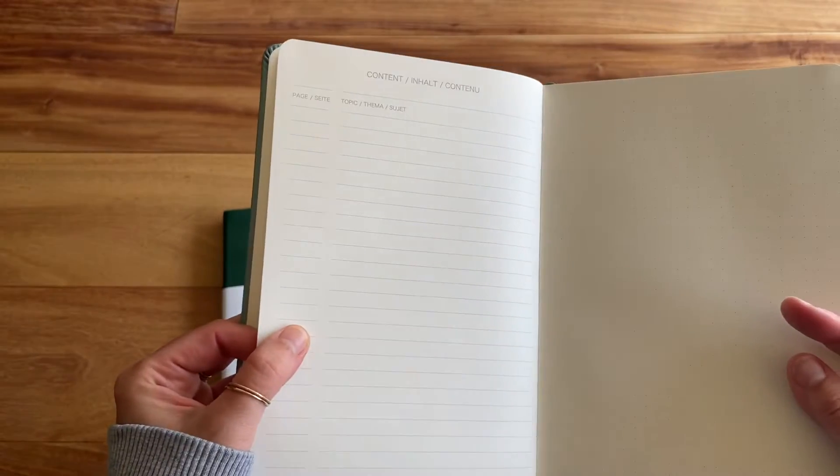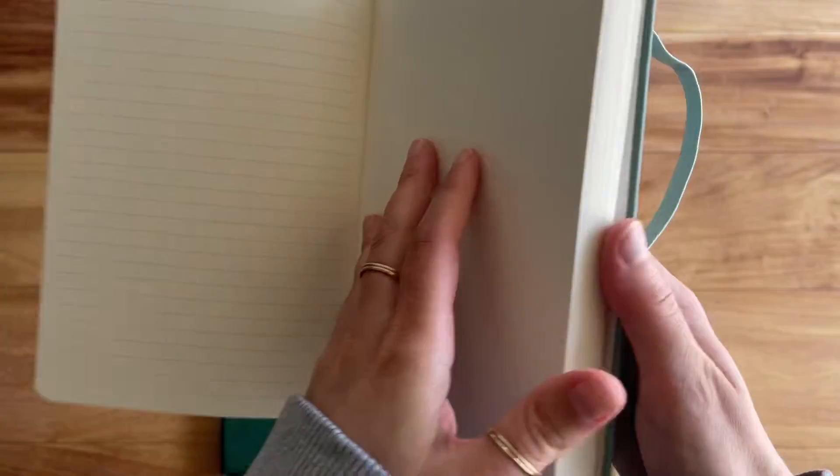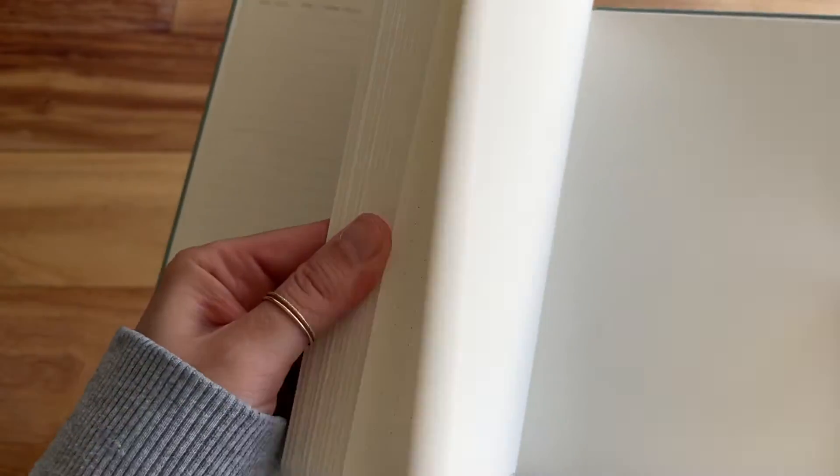Like a table of contents. Two pages. And then it goes into page one. And it does have numbered pages as you can see. And it is 188 pages here.